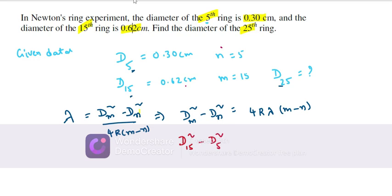Applying this formula: D₁₅² - D₅² = 4Rλ(15-5) = 4Rλ(10). This is equation 1.